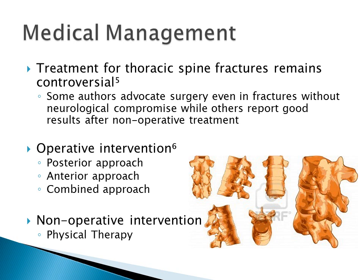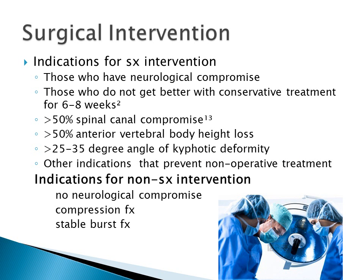Treatment for thoracic spine fractures remains controversial. There is no consensus on when surgery should be used and when non-operative treatments should be used. Operative interventions include posterior approach, anterior approach, and a combined anterior-posterior approach. Non-operative interventions are where physical therapists come in. Surgical indications include neurological compromise, failure to improve with conservative treatment, greater than 50% spinal canal compromise, and other indications preventing non-operative treatment. Indications for non-surgical intervention include no neurological compromise, simple compression fractures, and stable burst fractures.